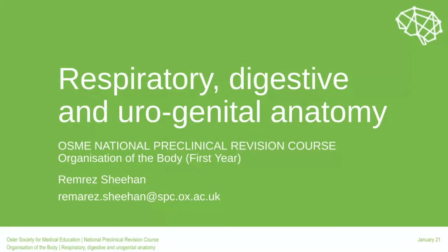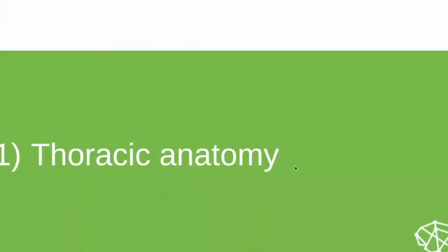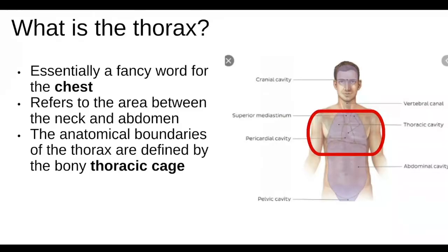To kick off, we're covering thoracic anatomy. The thorax is basically just a fancy word for the chest — the area between the bottom of the neck and the beginning of the abdomen, the central portion of the trunk. Anatomically, the thorax is more precisely defined by the thoracic cage and its components, which I'll go through shortly.